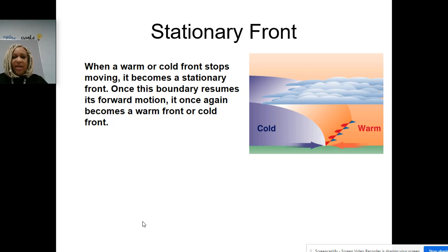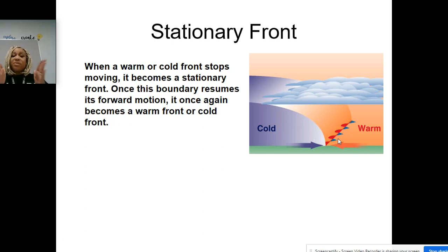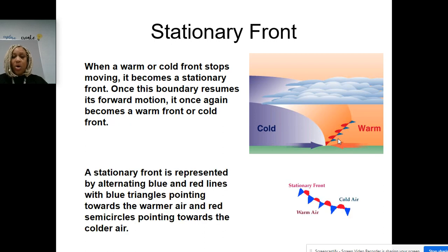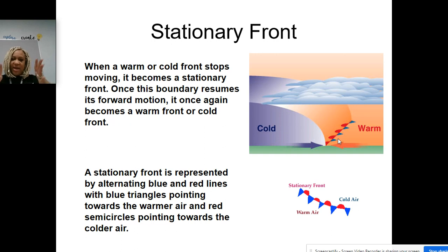A stationary front is that cold and warm front merging together — it's almost like a convergence. When a warm and cold front stops moving, it becomes stationary. Once this boundary resumes its forward motion, it once again becomes a warm front or a cold front. A stationary front is represented by alternating blue and red lines, with blue triangles pointing towards the warmer air and red semicircles pointing toward the colder air — kind of like a tug of war.